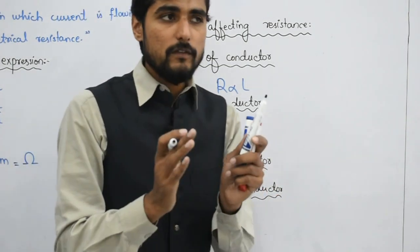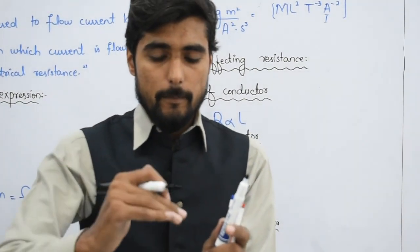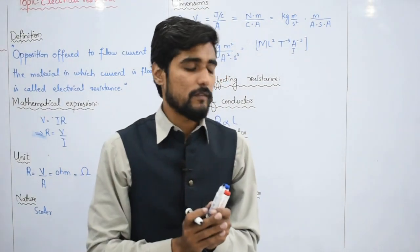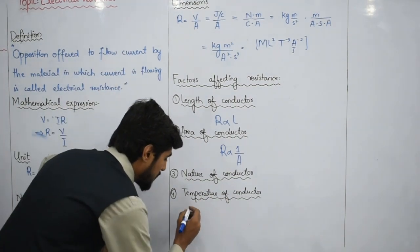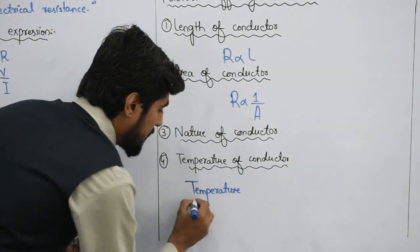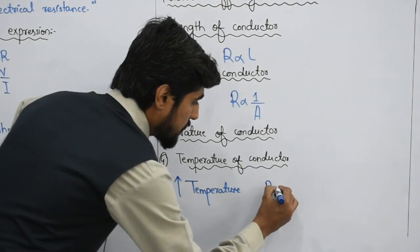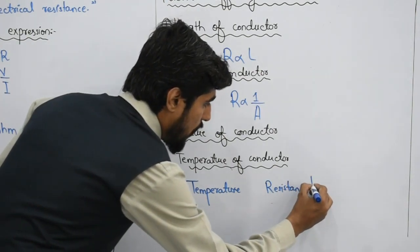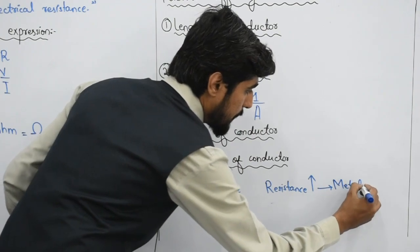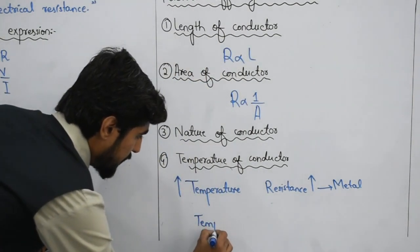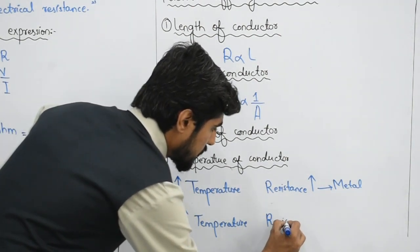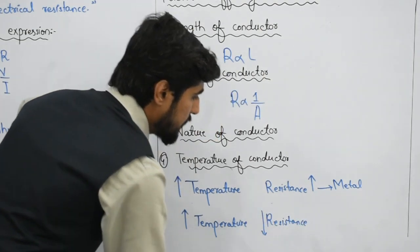How does temperature affect resistance? For metals: when temperature increases, resistance will increase. For semiconductors: when temperature increases, resistance will decrease — we will discuss why. So for metals, if temperature increases, resistance also increases. For semiconductors, if temperature increases, the resistance will obviously decrease. This difference in behavior between metals and semiconductors regarding temperature is important to remember.